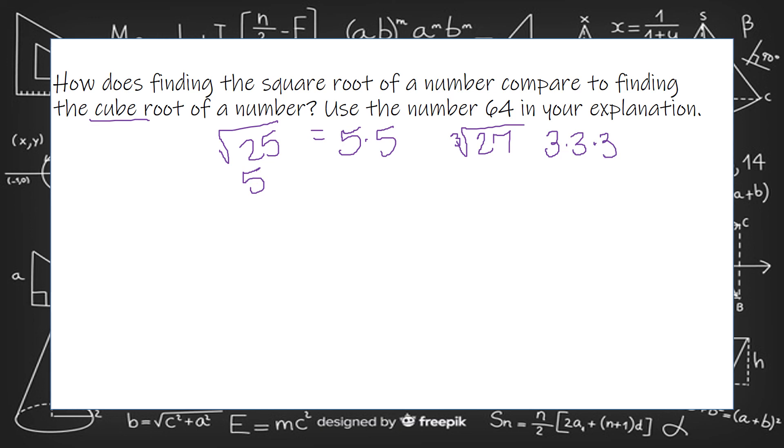That's three factors multiplied together to give us 27. So in your answer, you're going to show me how the square root of 64 is different from the cube root of 64 because it does want you to use the number 64 in your explanation.